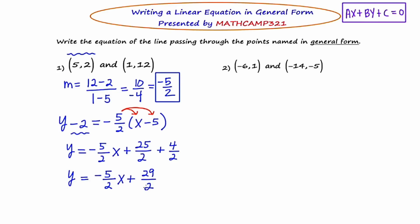And for my next step, I'm going to multiply through by 2 to clear the fractions, giving me 2Y equals negative 5X plus 29.